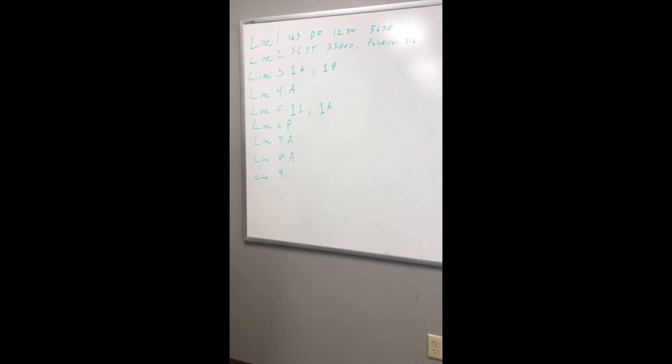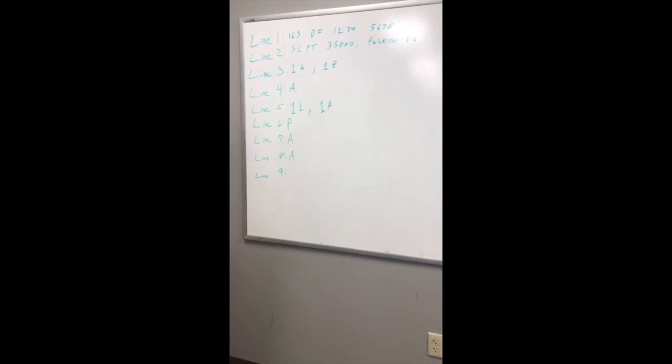Line one, one six Sierra Delta Foxtrot one two tree Fowler five six seven eight. Line two, single channel plain text tree five zero zero zero painkiller one six. Line tree, one alpha break one bravo.